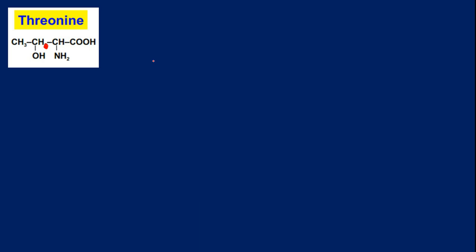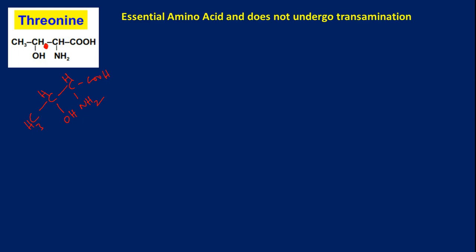Now let us see threonine. Threonine is an essential amino acid, very closely related to the amino acids we just discussed. Glycine is the base framework; adding one more carbon gives alanine; adding a hydroxy group gives serine; and adding one more carbon to serine gives threonine. In this way, all these amino acids are related to one another. Threonine is an essential amino acid — it cannot be synthesized in our system.